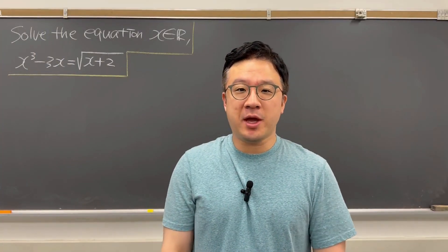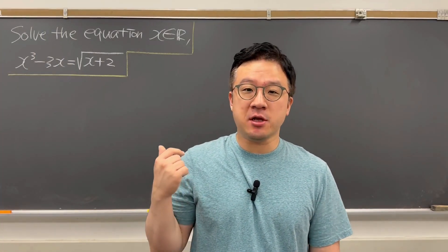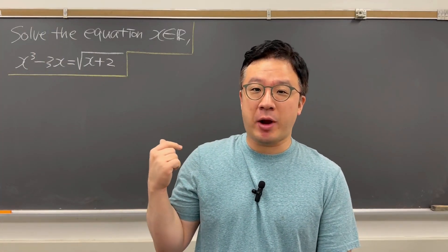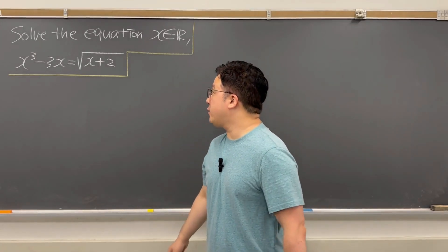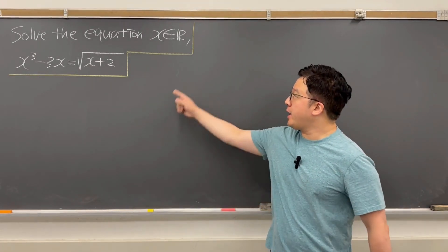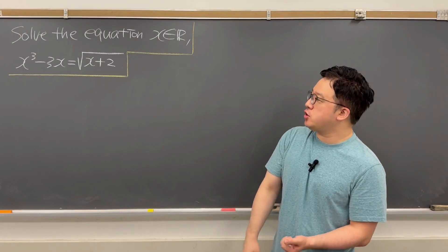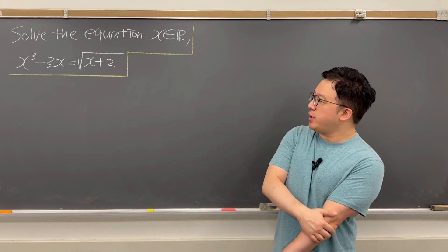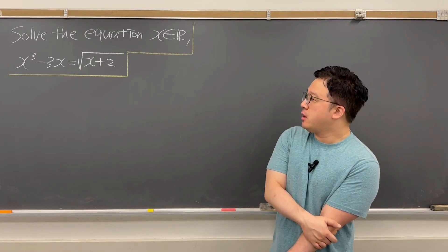Hello guys, welcome back, P.K. here. So in this video, we're going to be solving this interesting radical equation. The question is: solve the equation when x is a real number. We have x cubed minus 3x is equal to the square root of x plus 2.